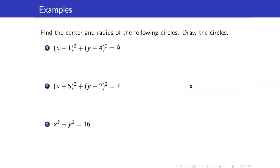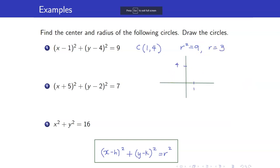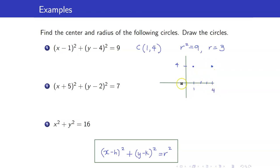Let us find the center and radius of the following circles and then draw them. Remember the equation of a circle is given by the center-radius formula. From our formula, the center here is (1, 4) and R squared is 9, so the radius is equal to 3. Let us now draw our circle. The center is (1, 4) and since we have a radius of 3, from the center I will go 3 units — so that's 1, 2, 3 — putting us at (4, 4).